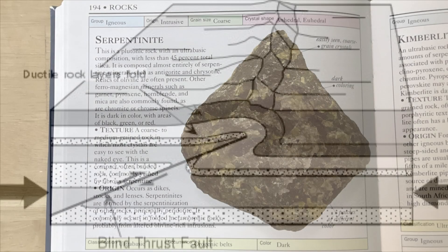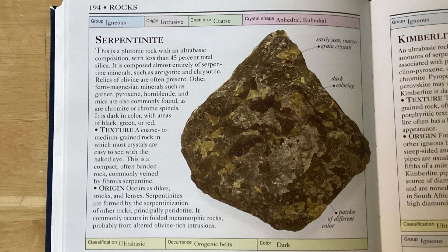One geological feature that Mount Tam is known for is serpentinite. It's basically a plutonic rock, and it occurs typically in dikes, stocks, and lenses. In this case, it's mostly going to be formed by dikes, which are breaks in the crust through which magma will rise up.